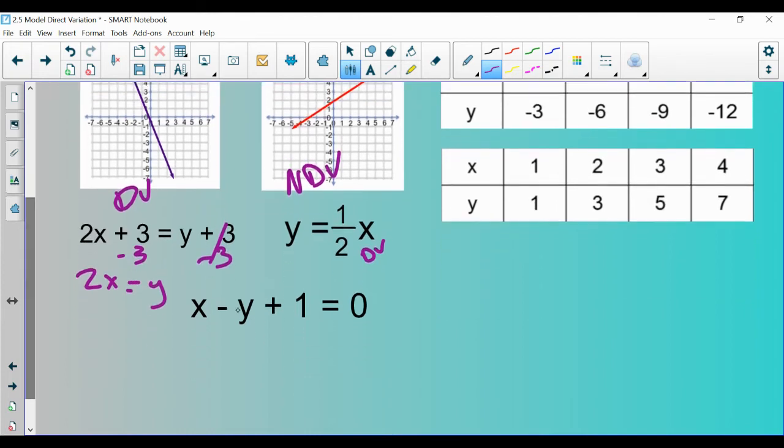This one over here though would not be direct variation. If you were to solve for y, you would subtract x and 1 to both sides. So you'd have y equals negative x minus 1. This is not direct variation because of this plus or minus thing that we are adding or subtracting at the end. In this case, it's a minus 1.